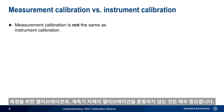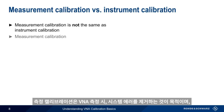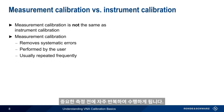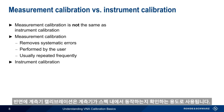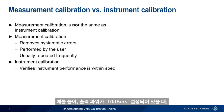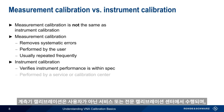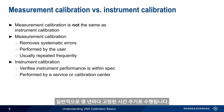It's important not to confuse measurement calibration with instrument calibration. A measurement calibration removes systematic errors in VNA measurements. It's performed by the user and is repeated rather frequently, often before each measurement session or at least before important measurements. Instrument calibration, on the other hand, is used to verify that the instrument is functioning within specifications. For example, that a generator is really outputting minus 10 dBm of power when output power is set to minus 10 dBm. Instrument calibration is performed by a service or calibration center, not by the user, and instruments are usually calibrated on a fixed time cycle, commonly every few years.